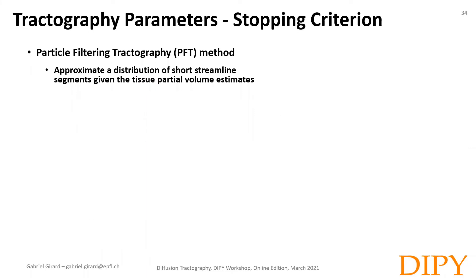Then, to reduce the number of excluded streamlines, the particle filtering tractography approximates a distribution of short streamline segments given the partial volume estimate, to find an alternative trajectory when the tractography incorrectly stops in the white matter or CSF.